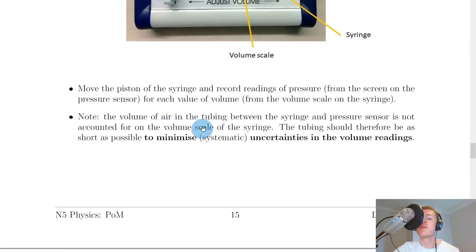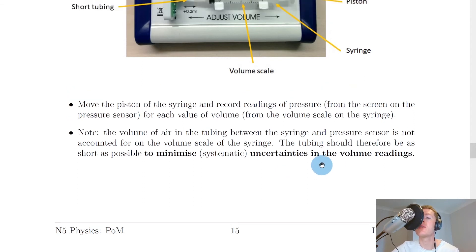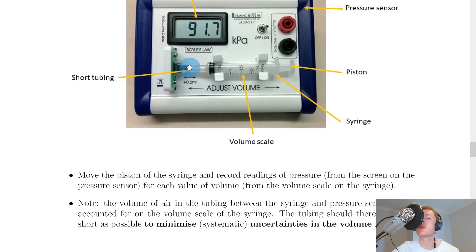Note that the volume of air in the tubing between the syringe and pressure sensor is not accounted for on the volume scale. The tubing should therefore be as short as possible to minimize uncertainties in the volume readings. In higher physics, this is called a systematic uncertainty. To minimize the uncertainty or error in volume readings, we need to make this tubing as short as possible. We're saying there's 0.2 millilitres of air that is not being accounted for on the scale, so all our volume readings are going to be slightly offset from what they should be.